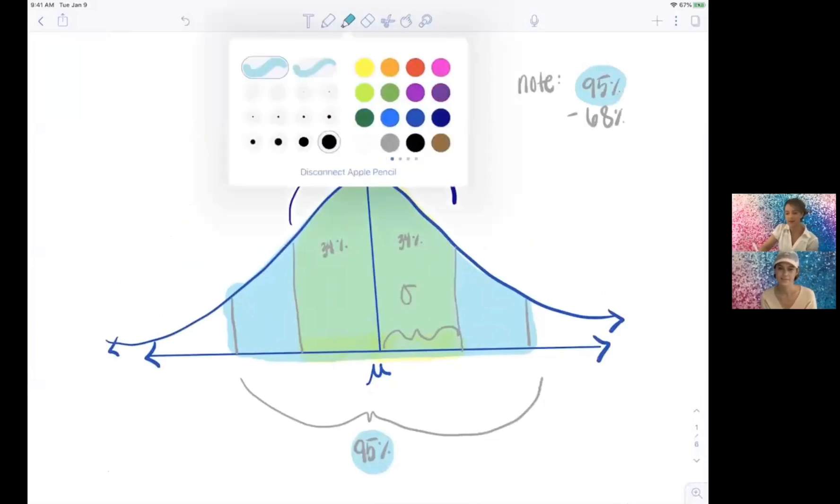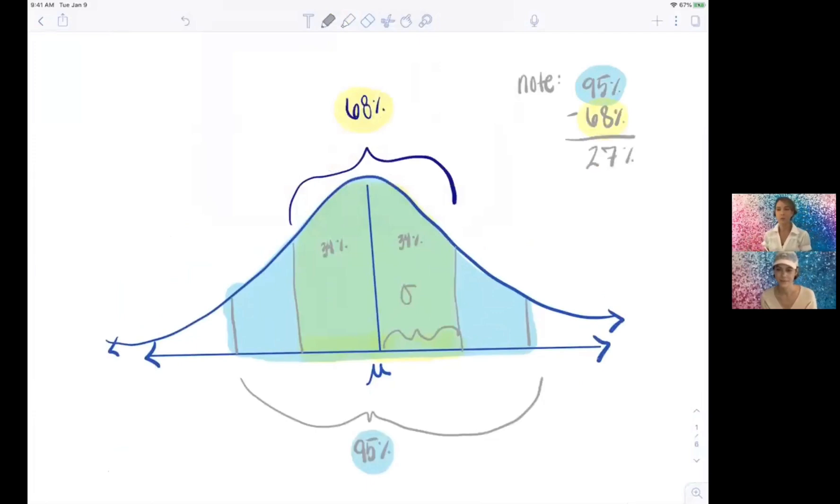So note, 95 percent in the blue minus the 68 percent in the yellow, which now kind of looks greenish, is 27 percent. So we have 27 percent left over to share between these two regions I'm shading here, right.